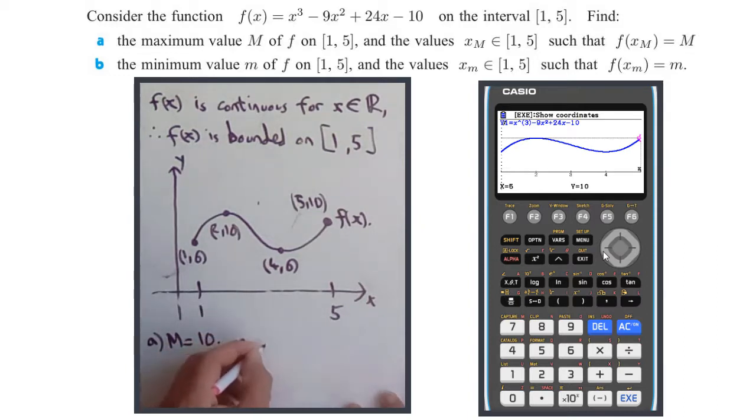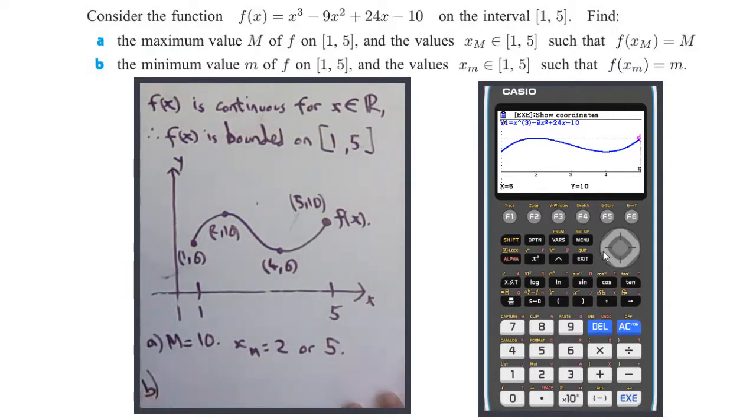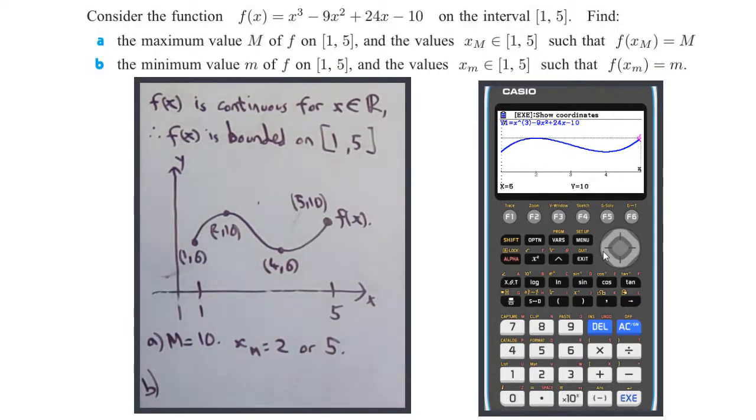For part b, you also have two choices. The minimum value is 6, so m = 6. The x values that make this true are x_m = 1 or 4. That's all for this question.